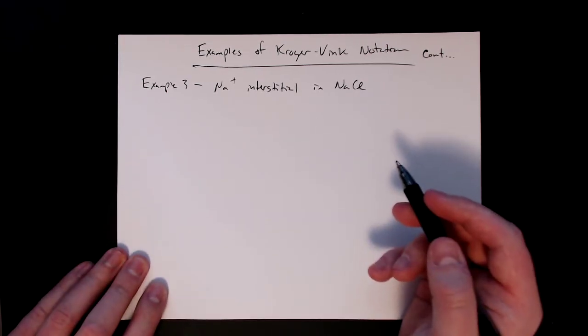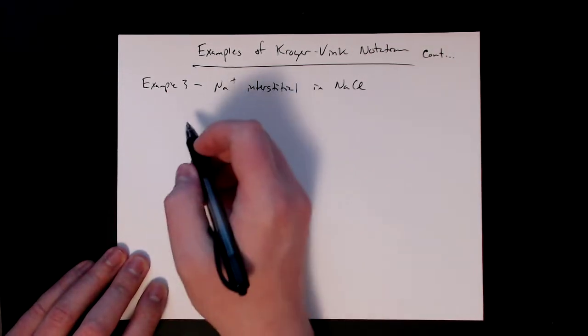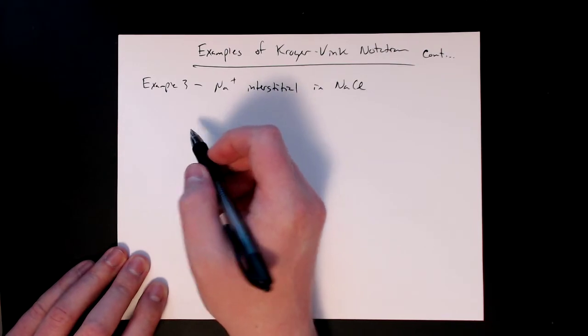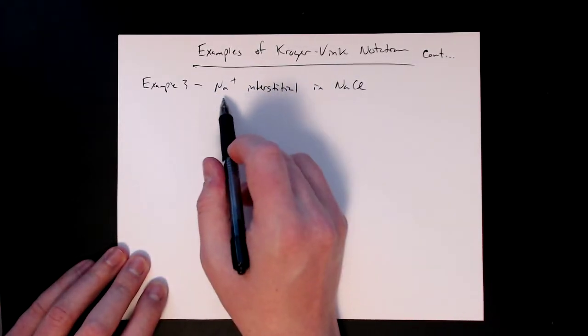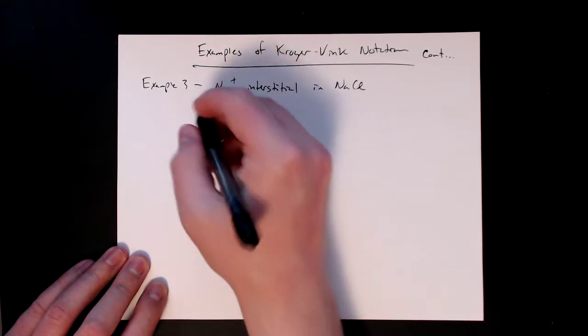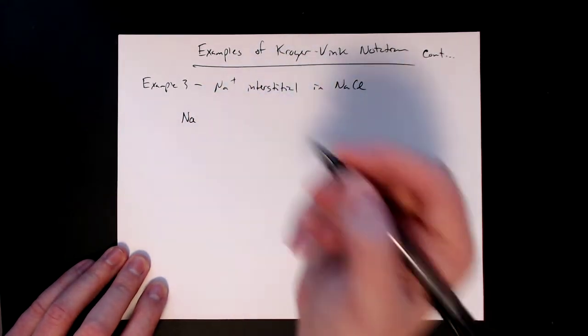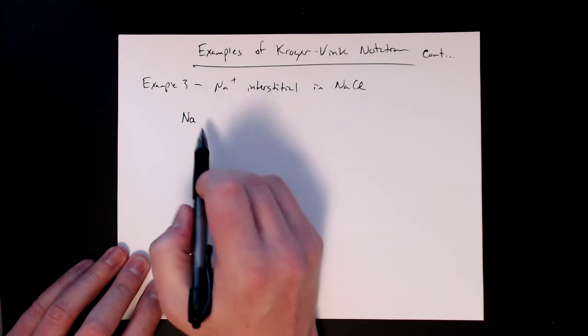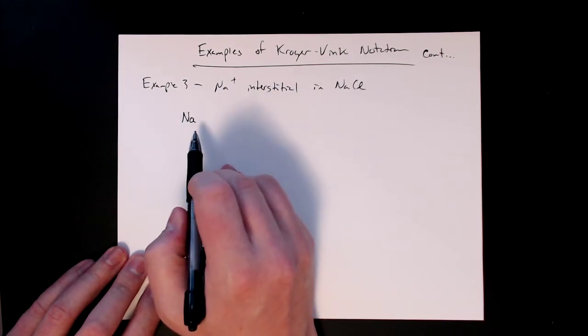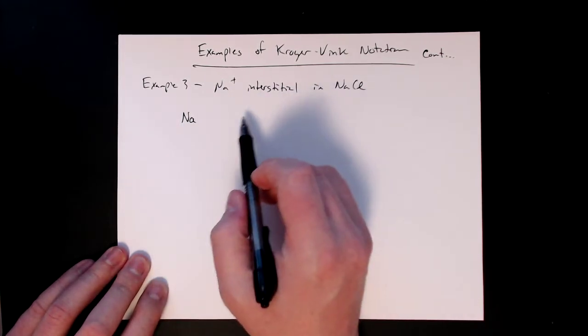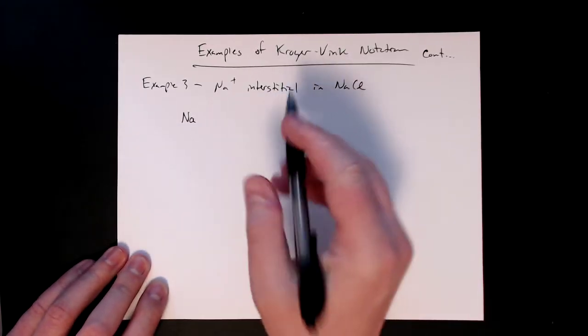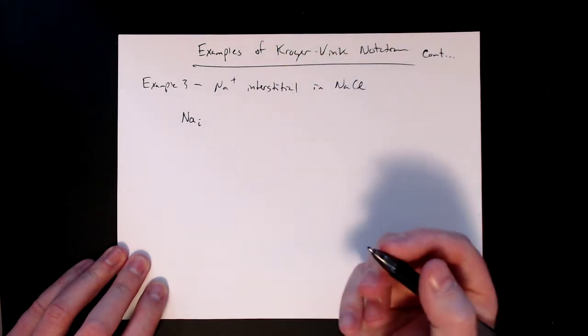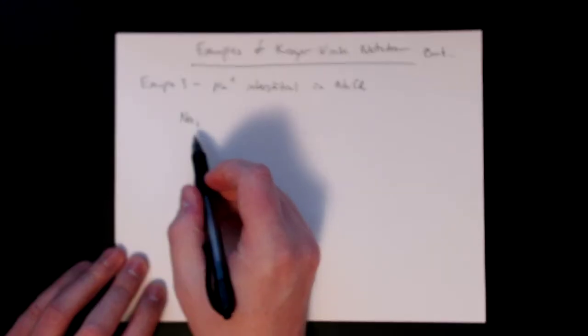So we start out just like we did before. The first thing we want to write is the species, and so we have an interstitial, but specifically it's sodium. So that's our species here, and don't worry about the charge, we'll cover that. And then the position that sodium is taking is given to us here, interstitial. We denote that with a lowercase i in the subscript.